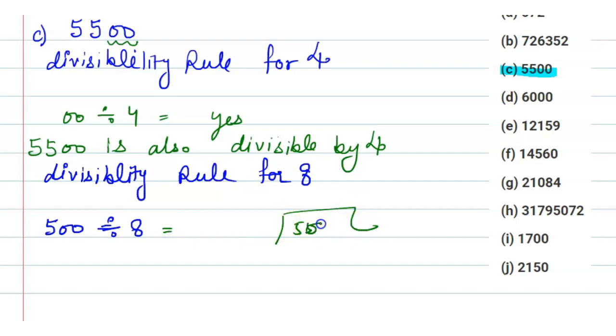Let's check if 500 is divisible by 8. 8 times 6 is 48, and 8 times 2 is 16, so it is not divisible. Therefore, 5500 is not divisible by 8. Thank you.